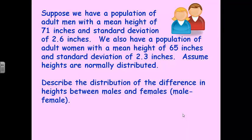Let's think about this question. Suppose we have a population of adult men with a mean height of 71 inches and a standard deviation of 2.6, and a population of adult women with a mean height of 65 and a standard deviation of 2.3. We know from past experience that heights are normally distributed. Describe the distribution of the differences in heights between males and females — doing male minus female. This is a describe-a-distribution problem, so you'll want to talk about center, shape, and spread.